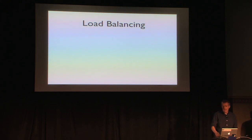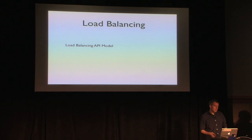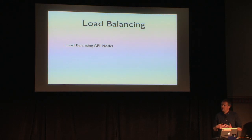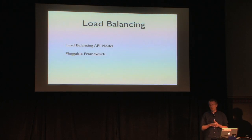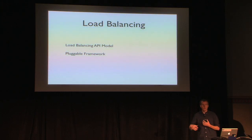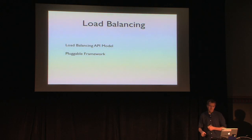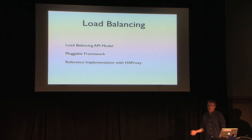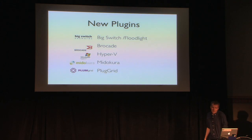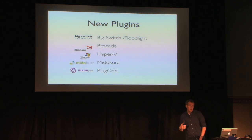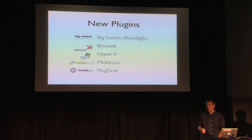Load balancing was another one of the big features added in Grizzly. What we developed is a load balancing API model — a consortium of vendors and community members worked hard during the cycle to develop this model. It's a pluggable framework, so you have the API on the front end, but on the back end multiple vendors can support that API and deployers can choose the solution appropriate for their deployment. We also developed a reference implementation with HA Proxy. We also added five new plugins during Grizzly: Big Switch, Brocade, Hyper-V, Midokura, and PLUMgrid.